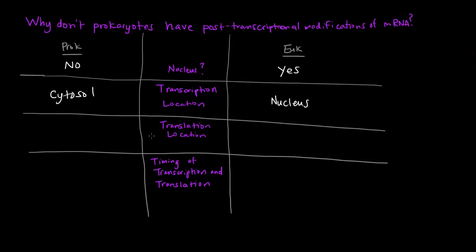Now, where does translation occur? Translation occurs in the cytosol in both of them, prokaryotes and eukaryotes. In prokaryotes, by default, because they have no place other than the cytosol for things to happen. In eukaryotes, translation occurs in the cytosol.